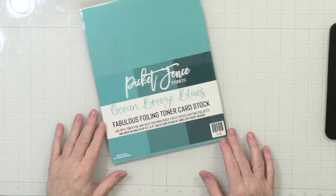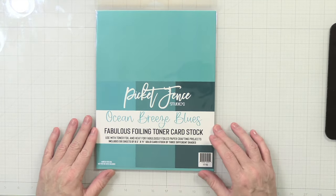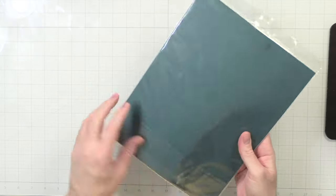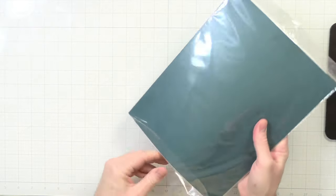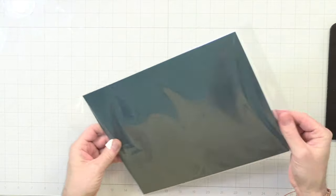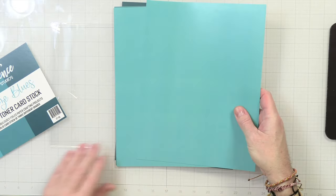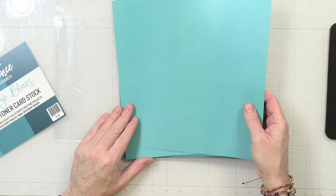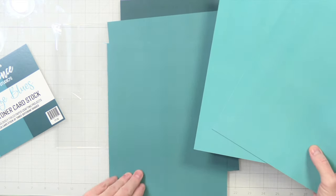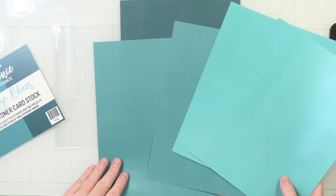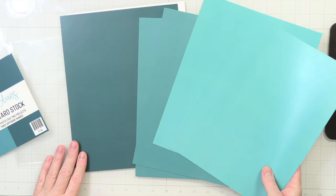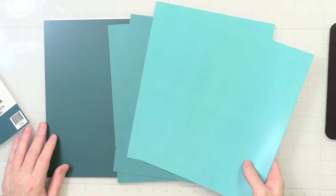Alright, and then last but not least we have Ocean Blues Breeze Blues. And these are also foil. It's a very nice color, an ombre situation there too.